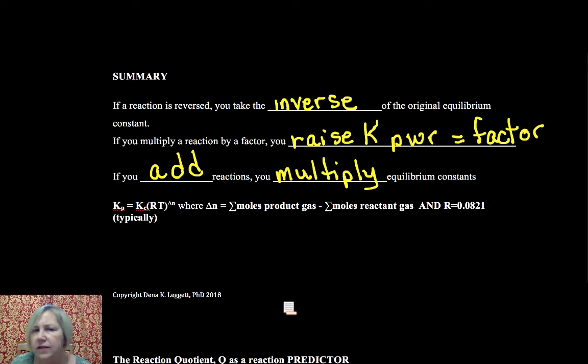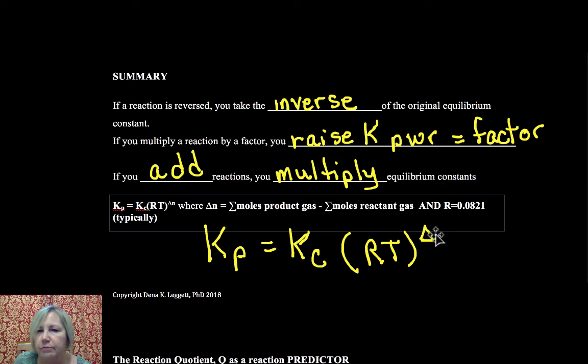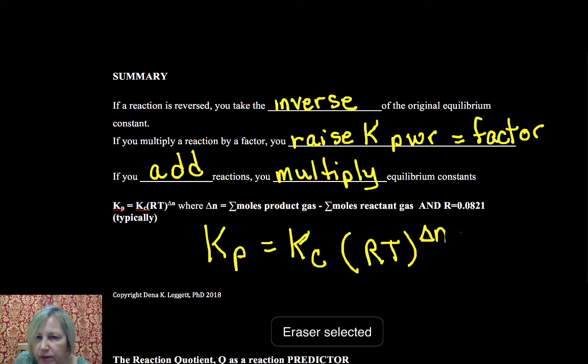And then one final, just because it's kind of an awkward thing to do all by itself, is the relationship between KP and KC. And if you are in an AP class, this is not covered as an objective in AP, but I teach IB and college chemistry and I just think it's good for you to know this. If you have K in terms of partial pressures, it relates to K in terms of concentrations by a factor of RT to the change in moles.